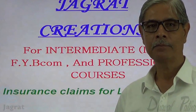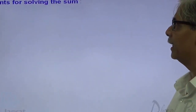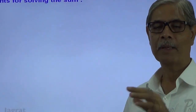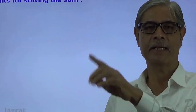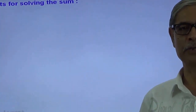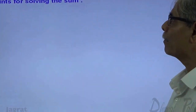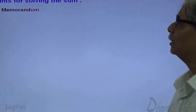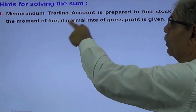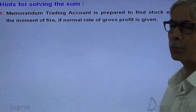Before I start with the sum, let me give you the theory hints for the purpose of solving the sum. To find out the stock existing at the moment of fire, we are required to prepare a memorandum trading account. This stock at the moment of fire is useful for finding out the amount of insurance claim under over-insurance or under-insurance situations. The memorandum trading account is prepared to find out the stock existing at the moment of fire, if the normal rate of gross profit is given.